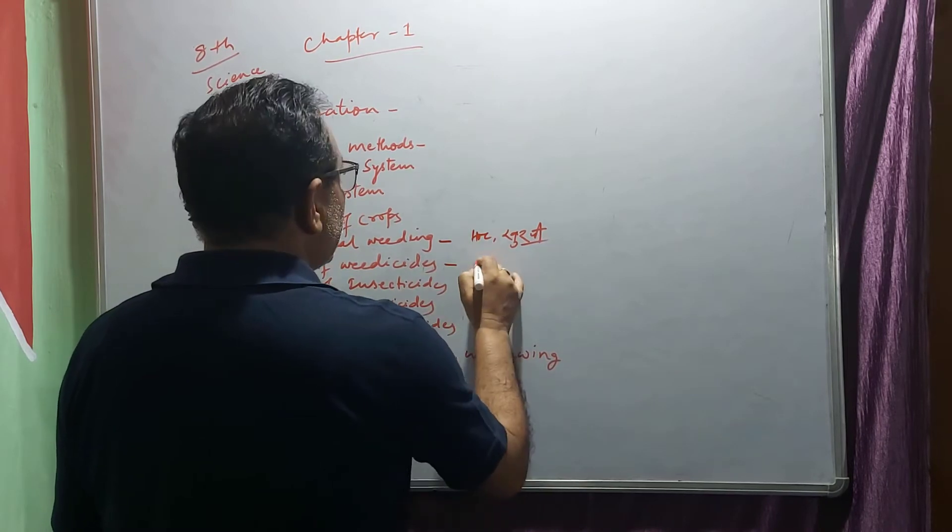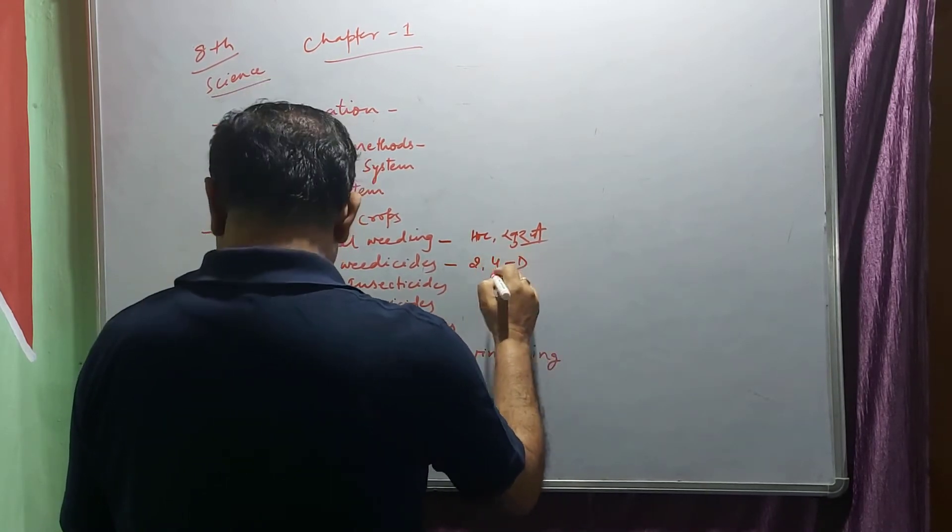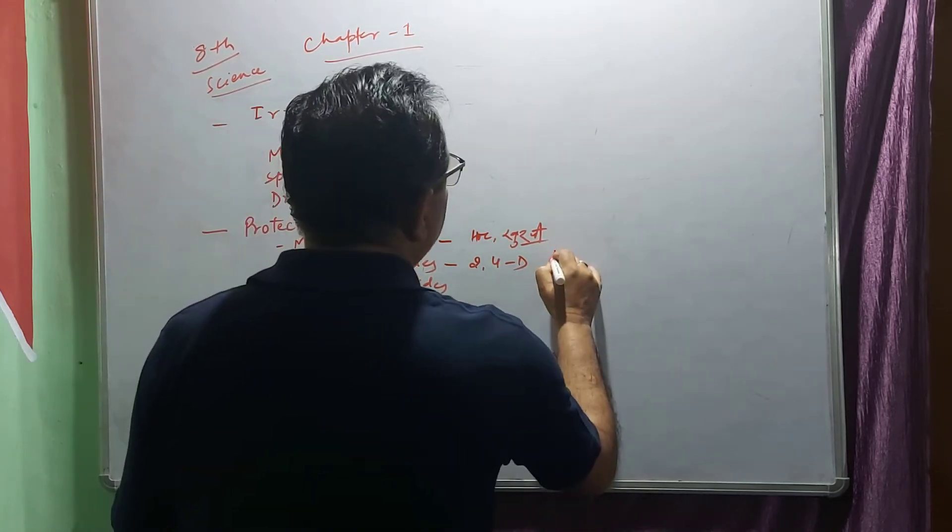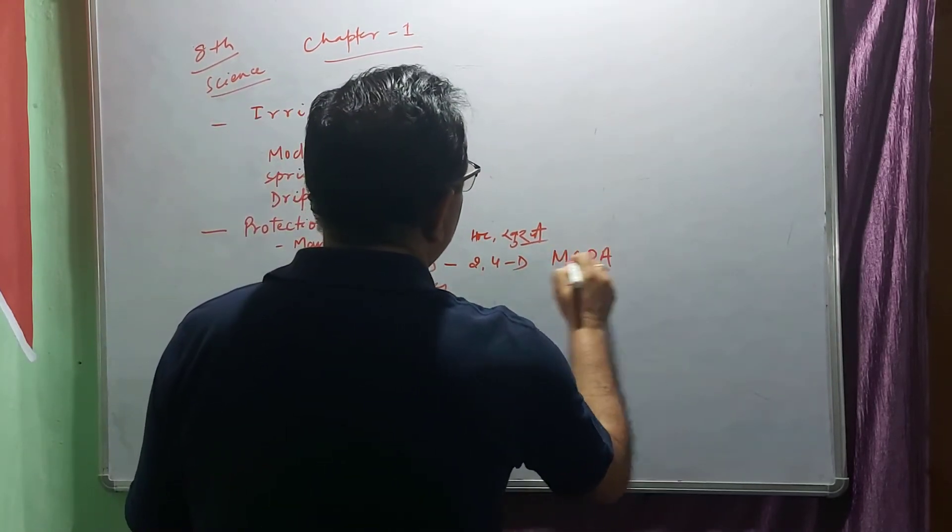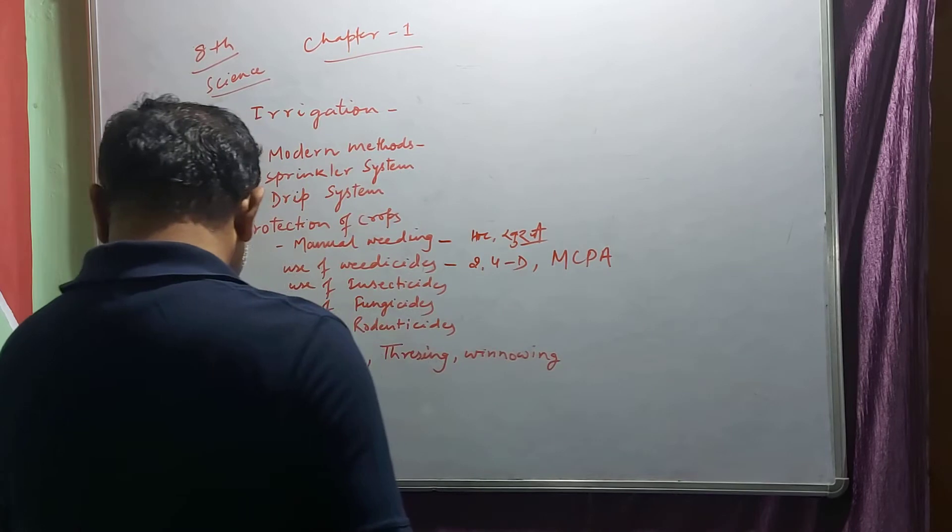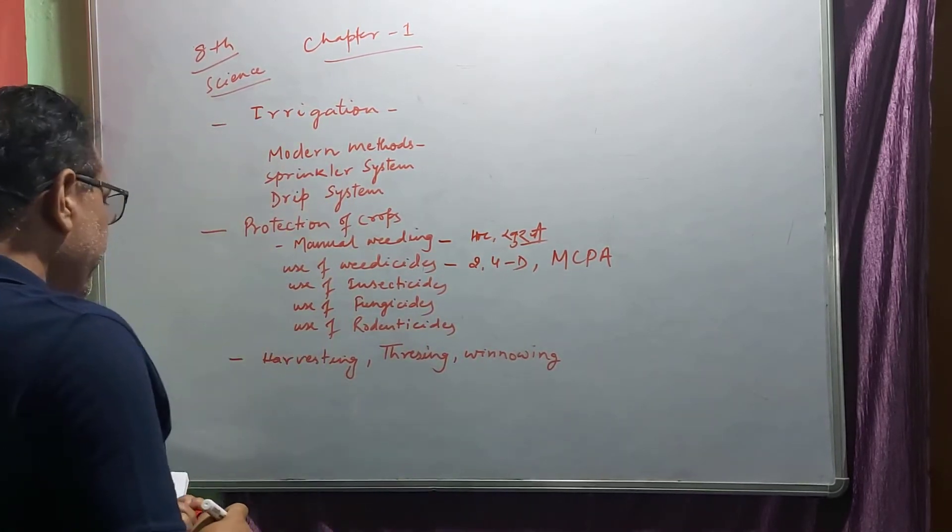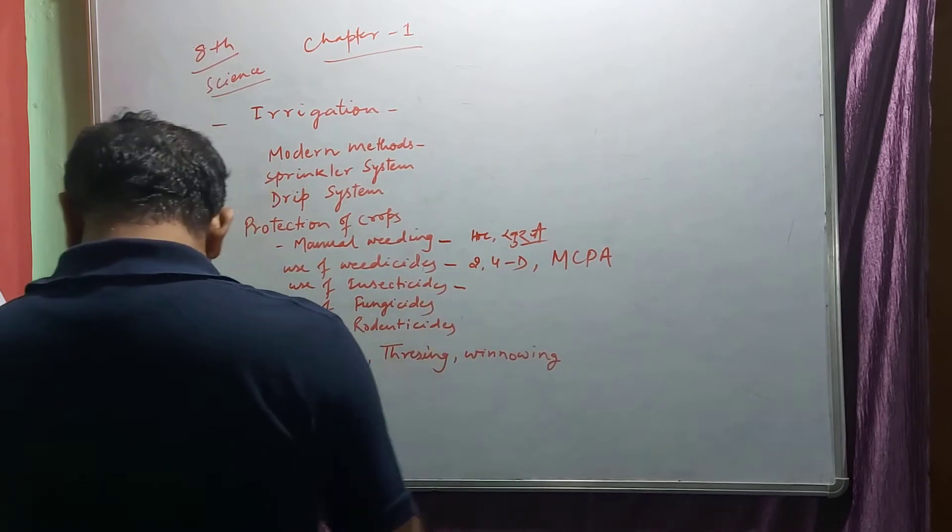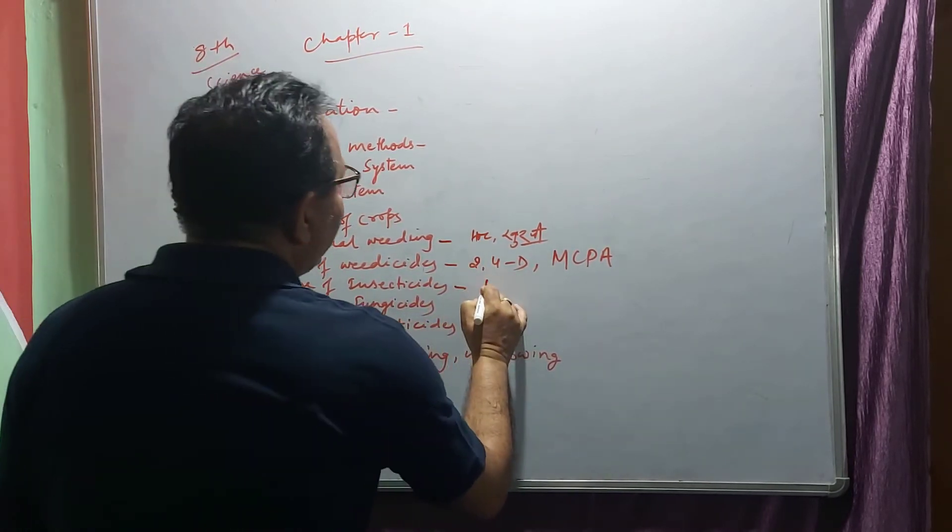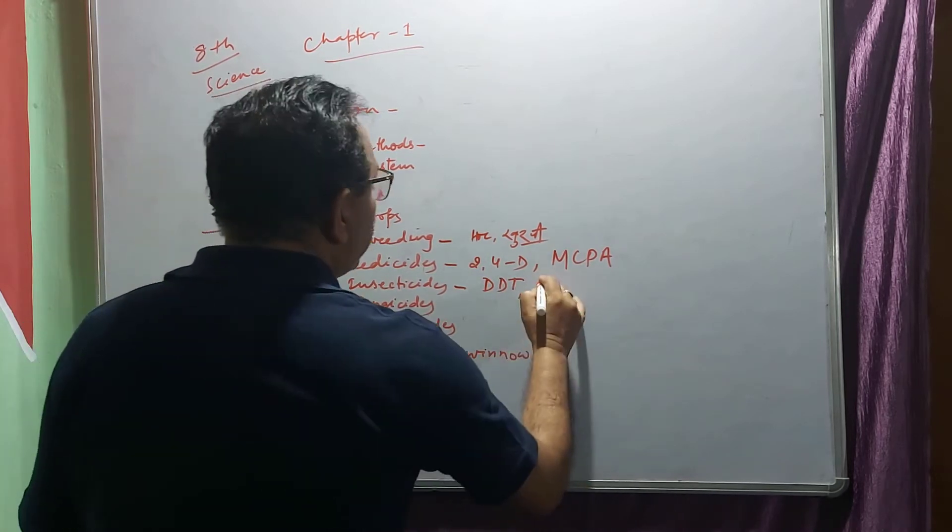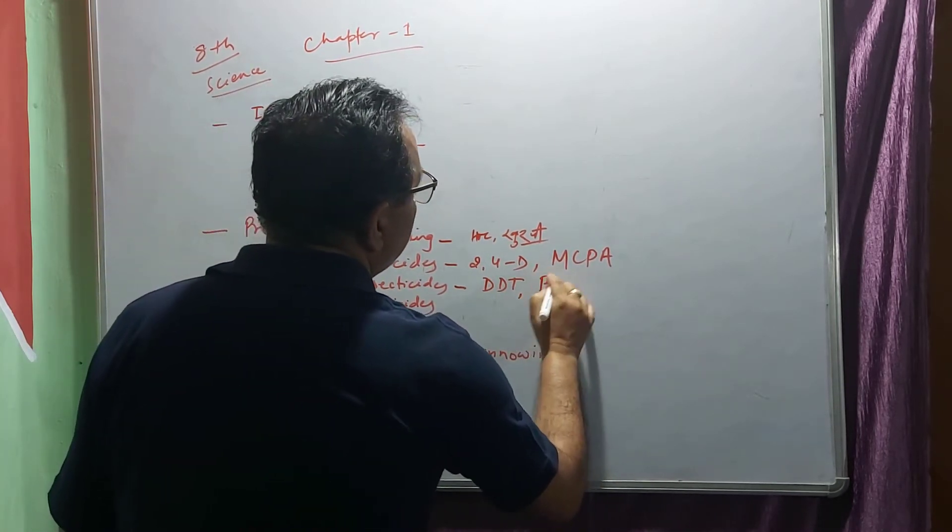2,4-D, which is MCPA. For insecticides we use DDT and BHC.